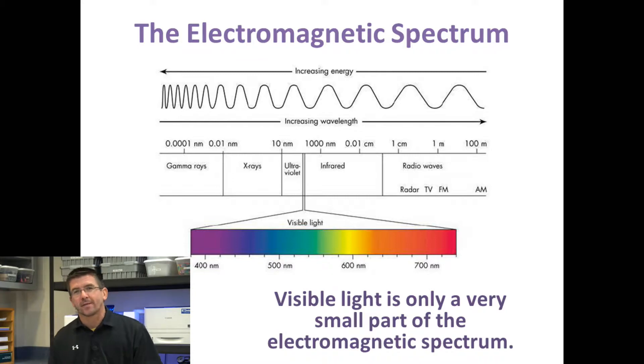Visible light is really a very tiny part of the electromagnetic spectrum, but it ranges all the way from violet on one end, the shortest wavelength, to red on the other end, the longest wavelength of visible light.